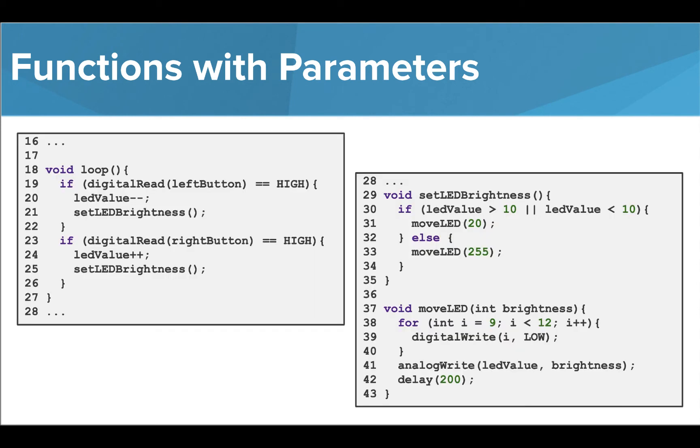If we wanted to change our previous program to make the outside LEDs less bright when they are lit than the middle LED, we can make these alterations and use parameters.